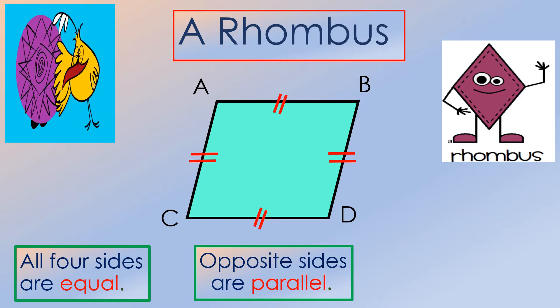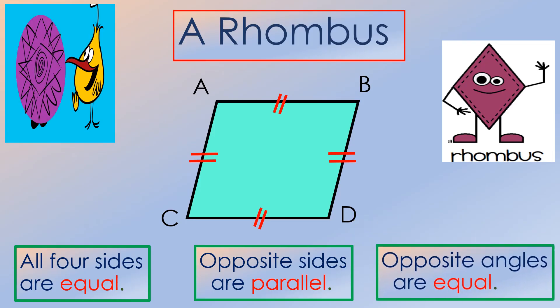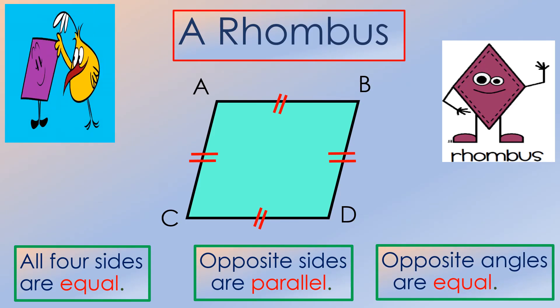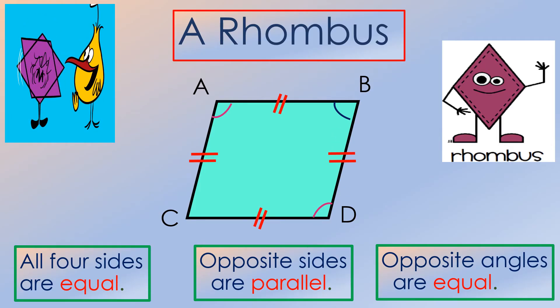Now take a look at the angles. If you notice, opposite angles are equal as well. Angle A is equal to angle D, and angle B is equal to angle C.